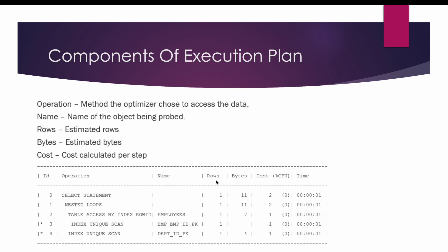The next component, rows, determines the number of rows that are expected out of each operation. For example, in operation number three, index unique scan using the employee_id_pk index is expecting one row out of this operation.